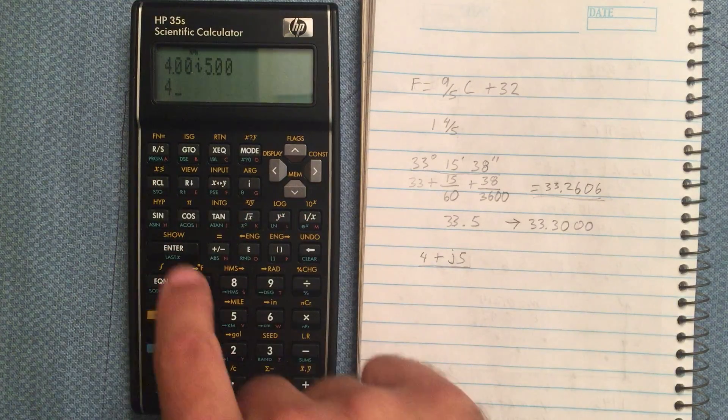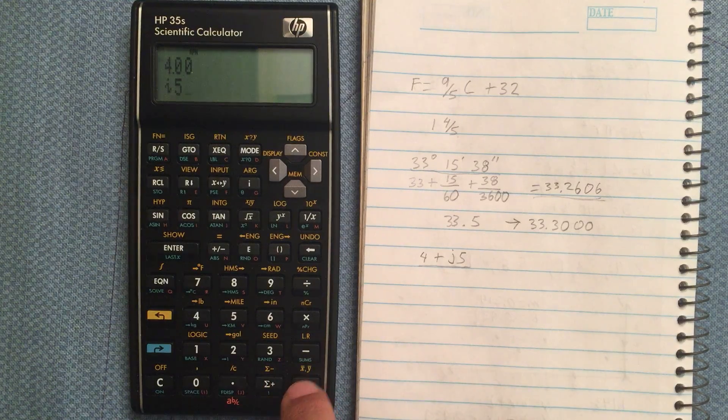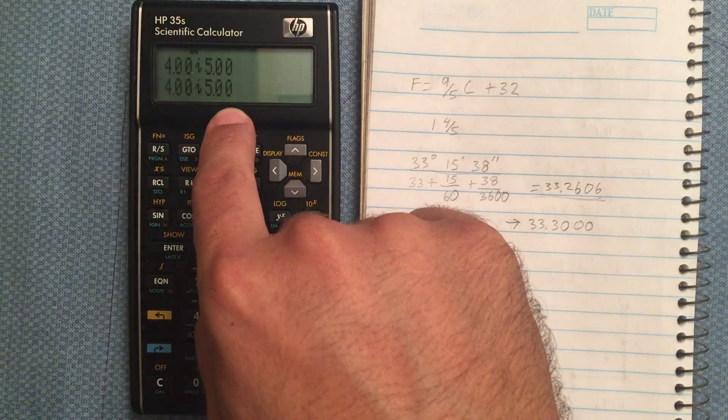Now I could also have done 4, enter, and then I5, and added those together, and it would be giving me the same thing.